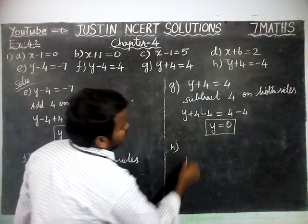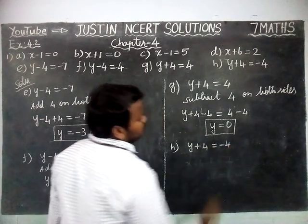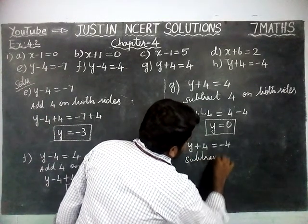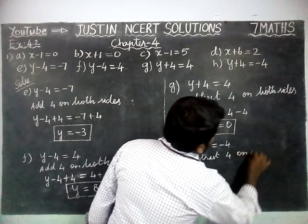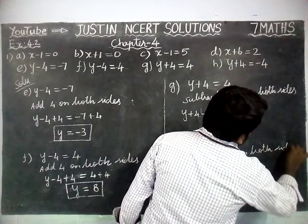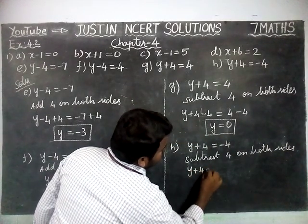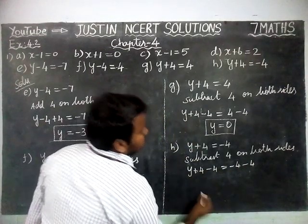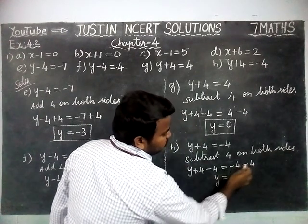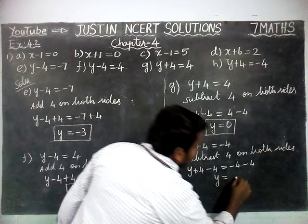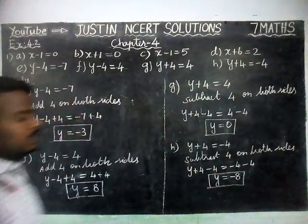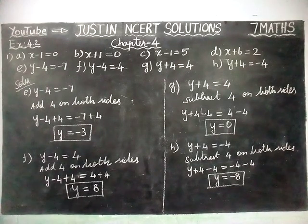Next part H: y plus 4 is equal to minus 4. To cancel this we have to subtract 4 on both sides. y plus 4 minus 4 is equal to minus 4 minus 4. Plus 4 minus 4 gets cancelled, so variable is separated. y is equal to minus 4 minus 4. Both are the same sign, so we add: 4 plus 4 equal to 8, and both have minus sign, so y value is equal to minus 8. That's all — kindly give your suggestions in the comments, share this video with your friends and subscribe to our channel. Thank you.